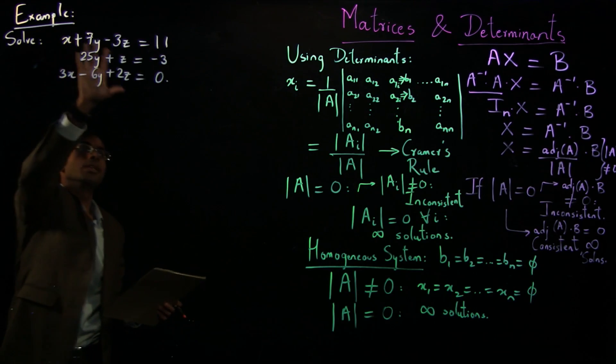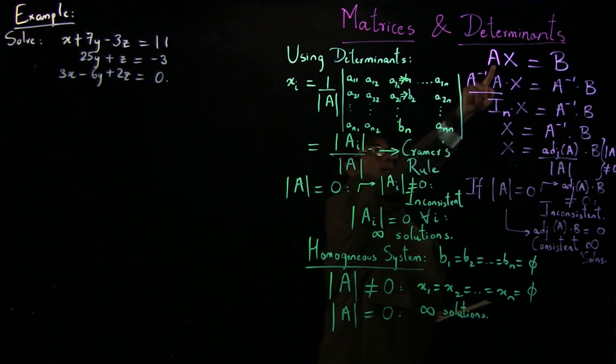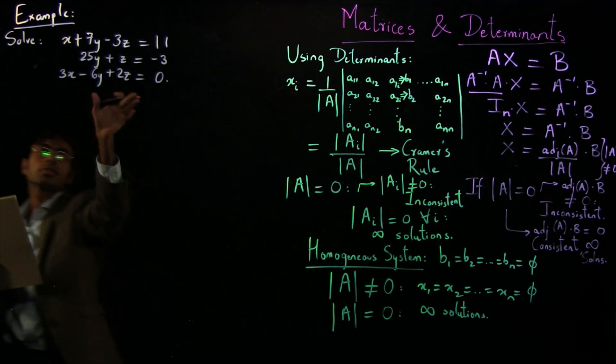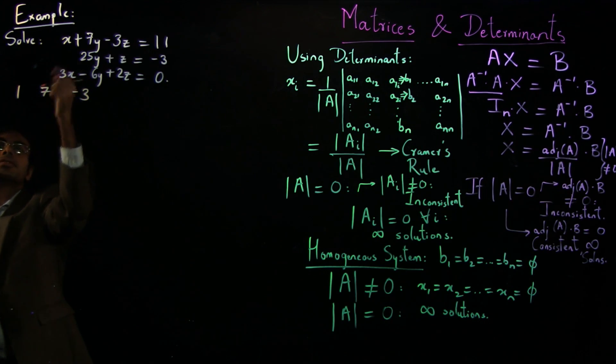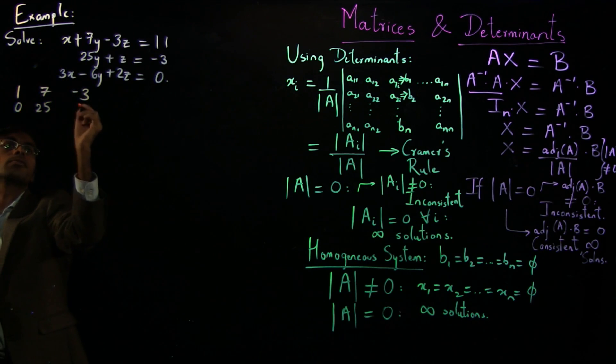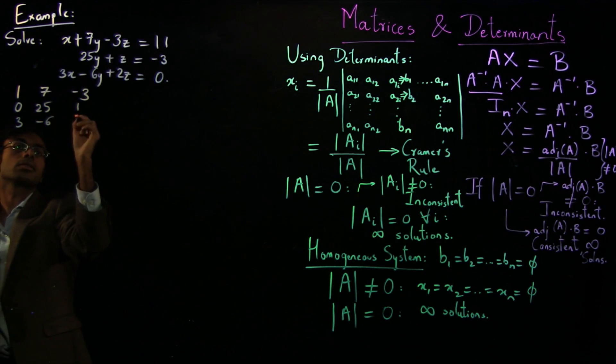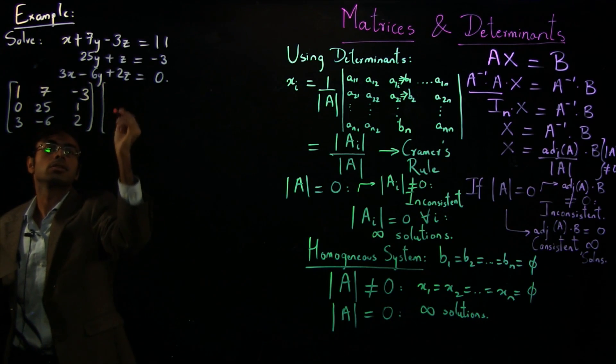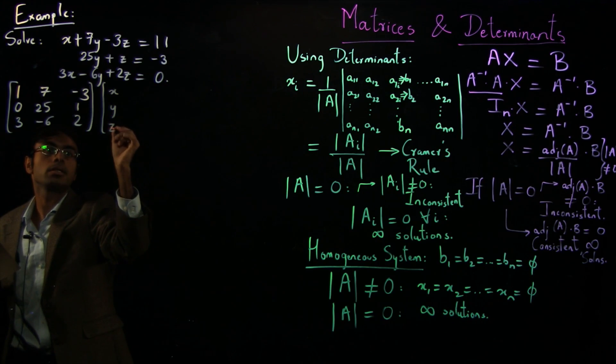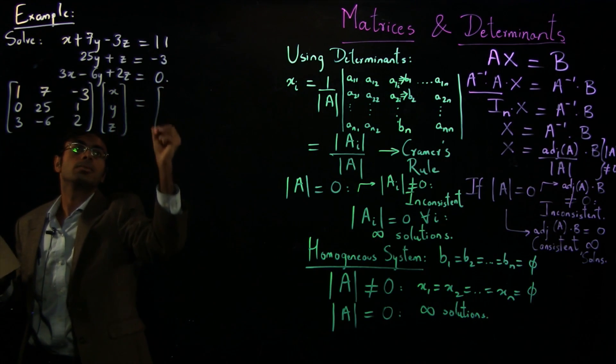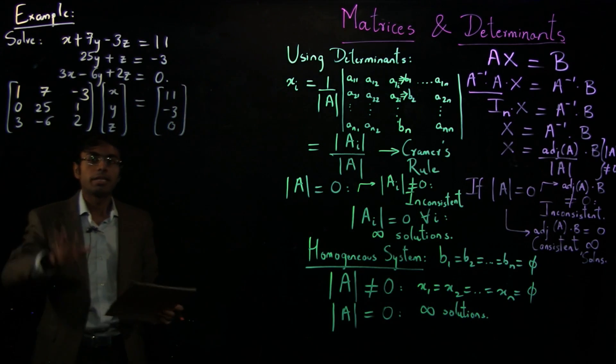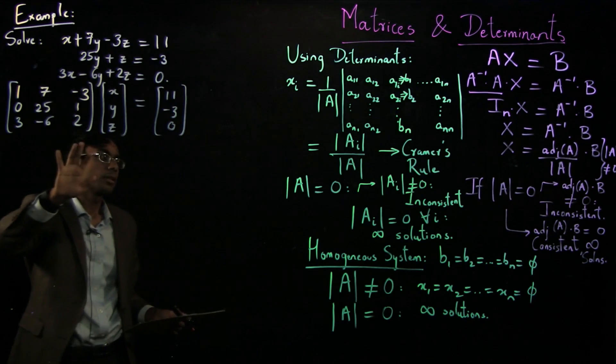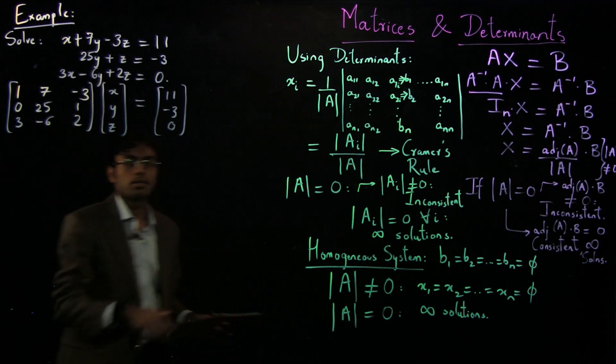The next thing to check would be this determinant, so this part, ax equals b. So let us first write it in that form. So a would be 1, 7, minus 3. For here it's zero times x. So zero, 25, 1, and 3, minus 6, 2. This is your A matrix times the variable matrix, in this case x, y, z equals b, which is 11, minus 3, zero. So after writing it in this form, ax equals b, the next thing to check is whether this determinant A is zero or not.